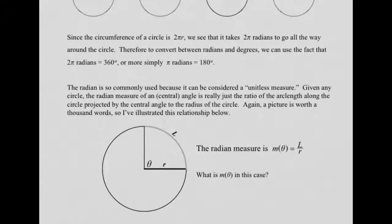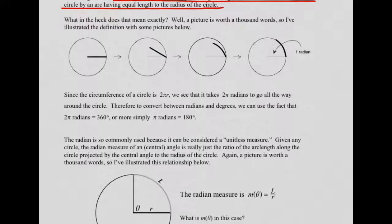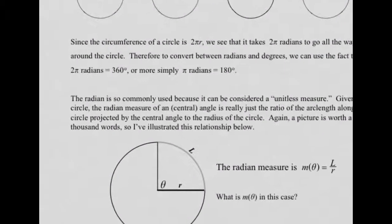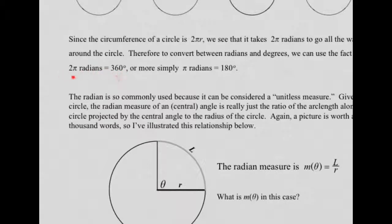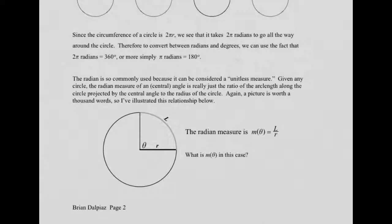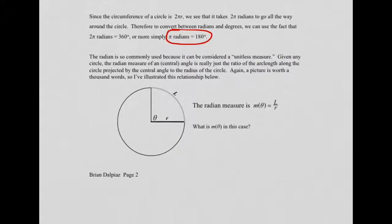Since the circumference of a circle is 2πr, it takes 2π radians to go all the way around the circle — 2π radii fit into the circumference. So the radian measure of a 360 degree angle is 2π, giving us the equivalency: 2π radians equals 360 degrees. Dividing both sides by 2, we get π radians equals 180 degrees. This is the conversion factor you're always going to use when converting between radians and degrees.